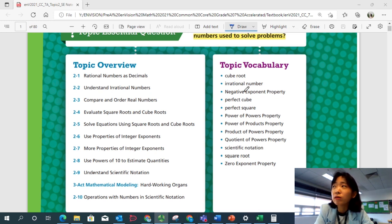We do have a lot of topic vocabularies as well. Cube root, irrational number, negative exponent property, perfect cube, perfect square, power of powers property, power of product property, product of powers property, quotient of powers property. There's a lot of properties. Scientific notation, if you don't know that already, square root, and zero exponent property. So we'll learn a lot about powers and exponents later. And we'll go over the properties and how to deal with them.